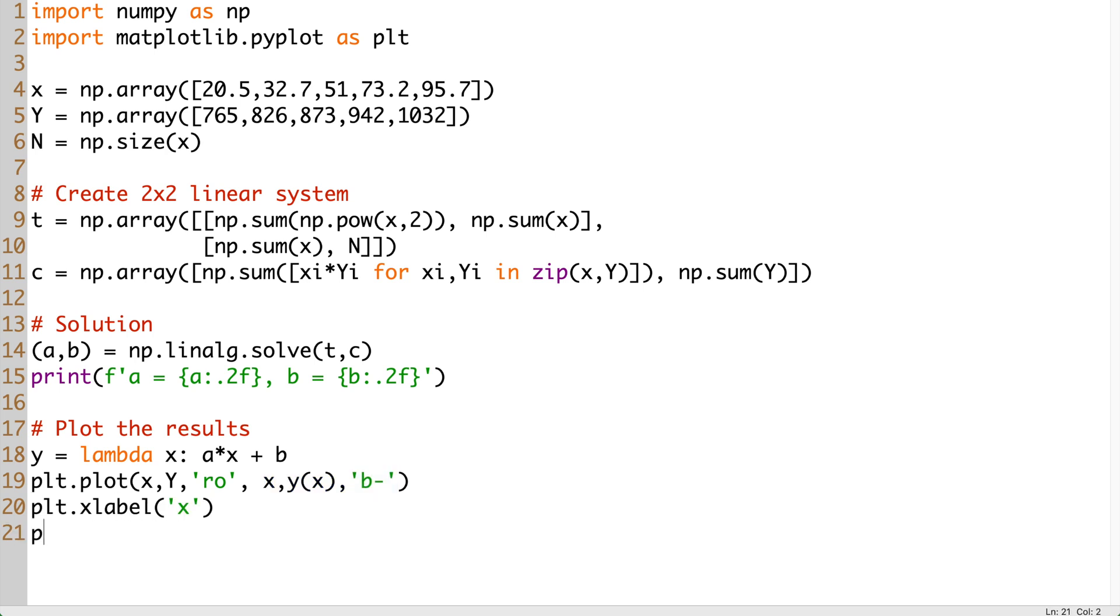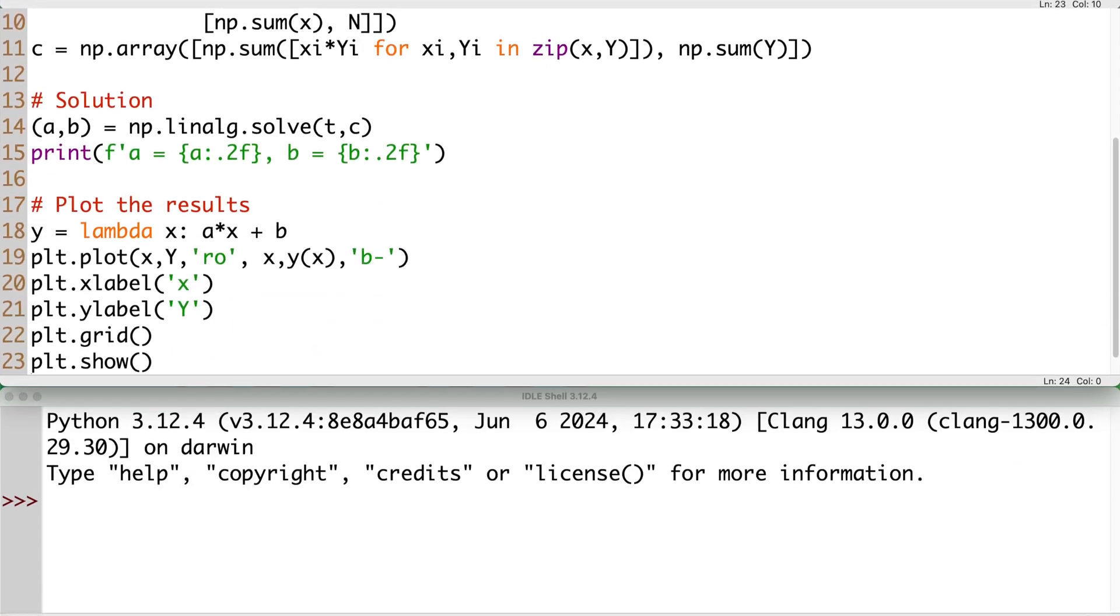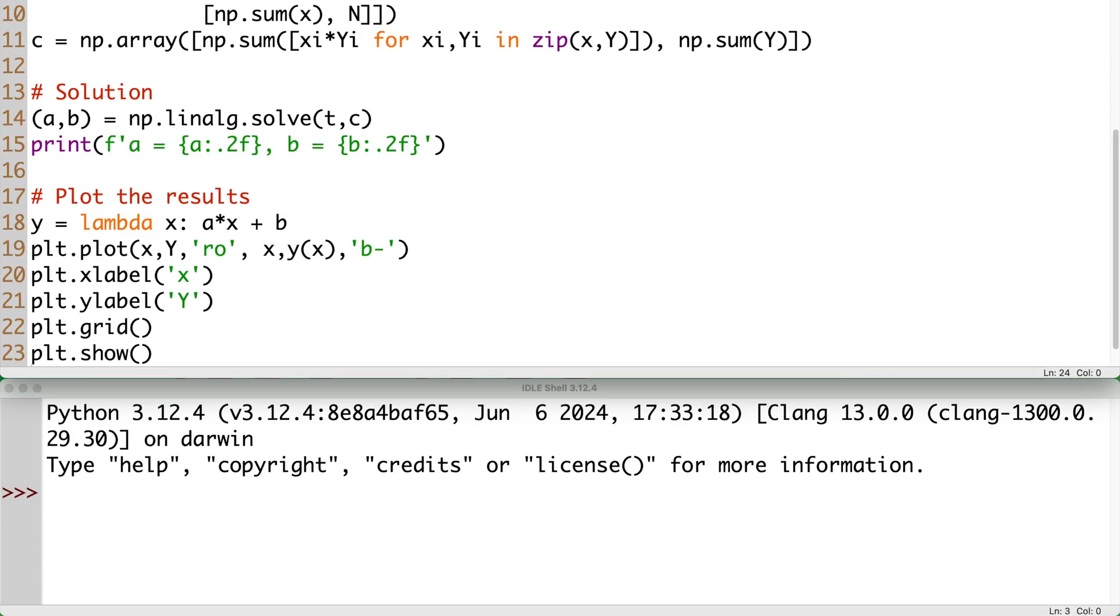Finally, we add the labels of X and Y axes and the grid lines. Now let's run the code and see the results.